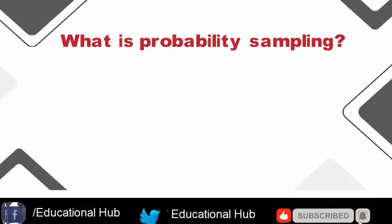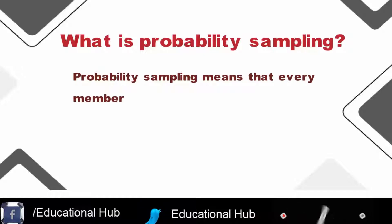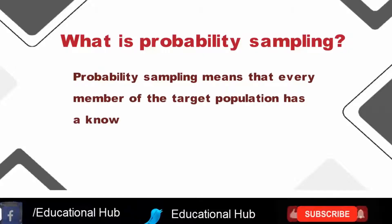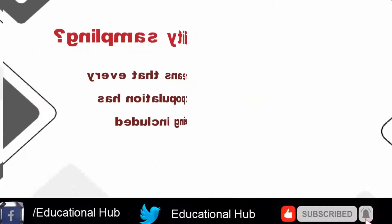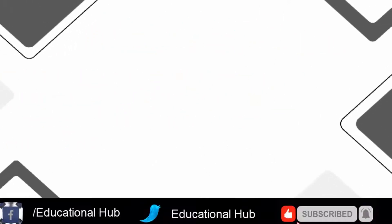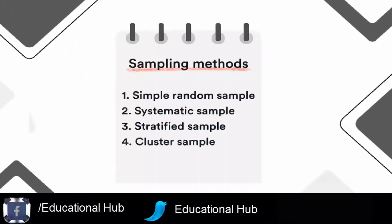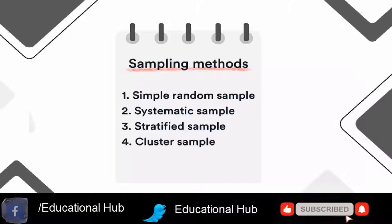What is probability sampling? Probability sampling means that every member of the target population has a known chance of being included in the sample. Probability sampling methods include simple random sampling, systematic sampling, stratified sampling, and cluster sampling.